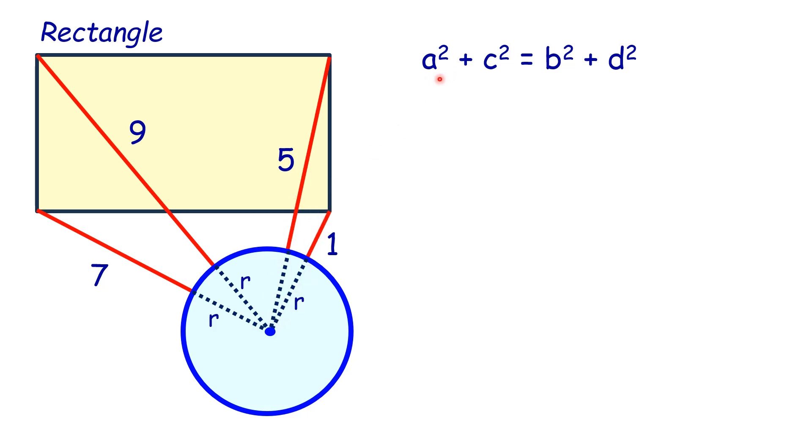So we replace a and c with 7 + r and 5 + r, b with 9 + r, and d with 1 + r.